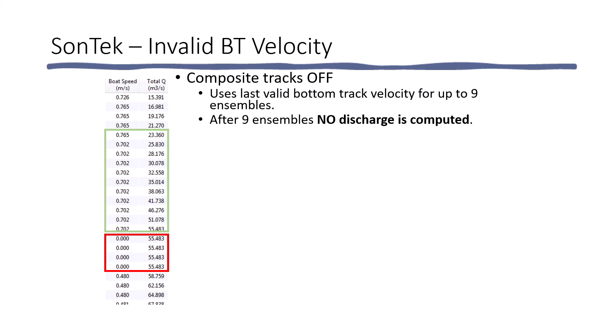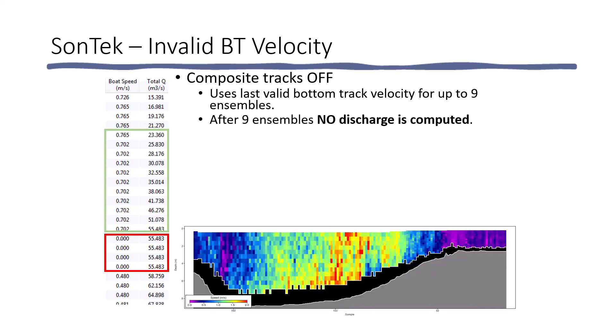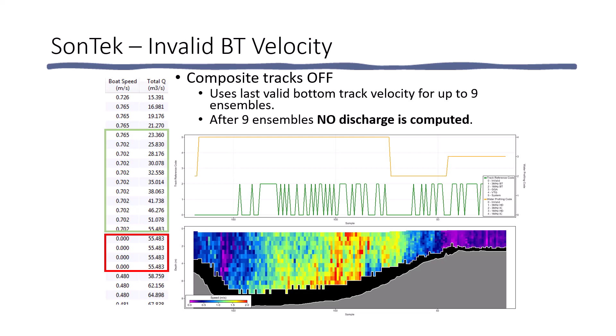Unfortunately, if we look at the color contour plot in River Surveyor Live, there is absolutely no indication that we've missed measuring the discharge in part of the cross section. The only way to know that there's a potential problem would be to plot the bottom track reference codes. And we see here when it goes to zero, that means invalid data. We would then have to look and see if that's longer than nine samples. And then we'd know that we were missing some discharge and our measurement was biased low.